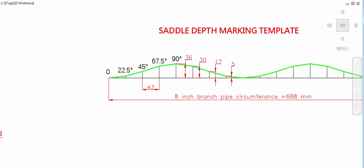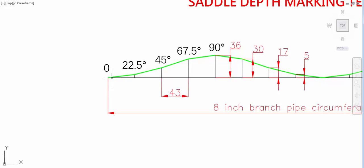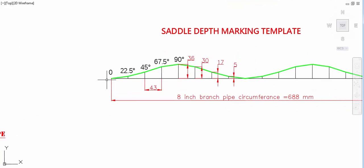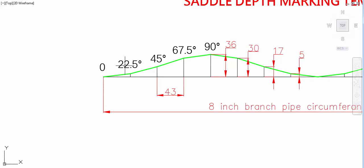Then now zero degree saddle depth, we don't have zero. 22.5 degree saddle depth is 5, so mark 5 from the end of the pipe. Then 45 degree, 17 mm from the pipe, mark 17 mm. Then 67.5 degree, 30 mm from the end of the pipe.